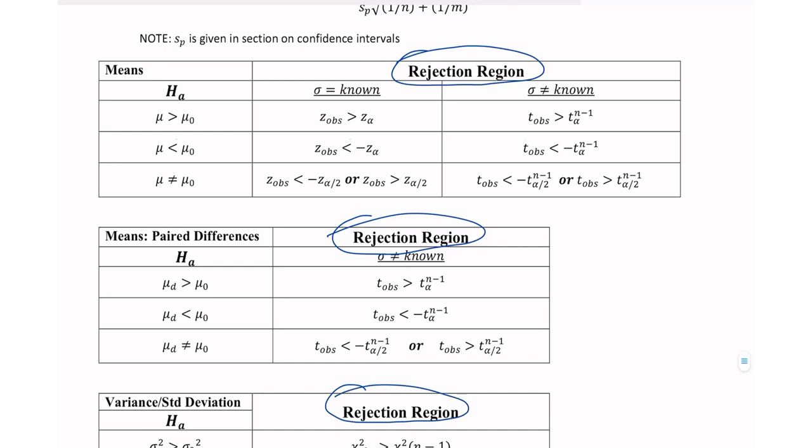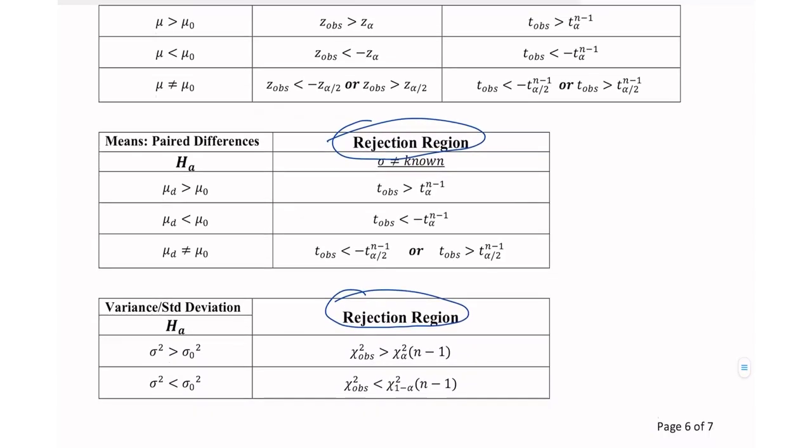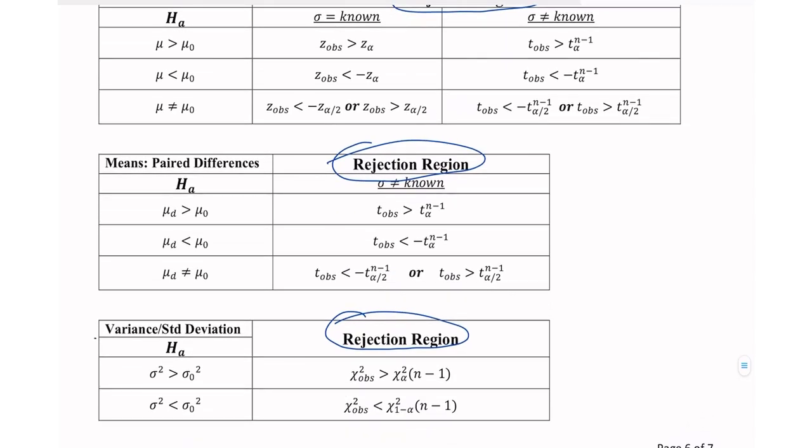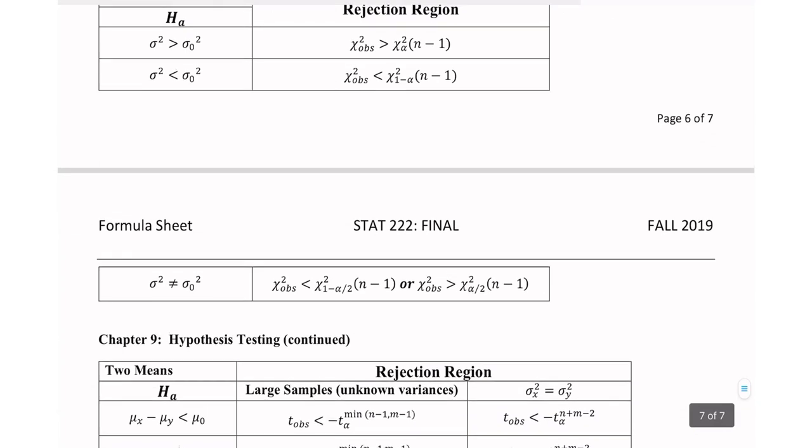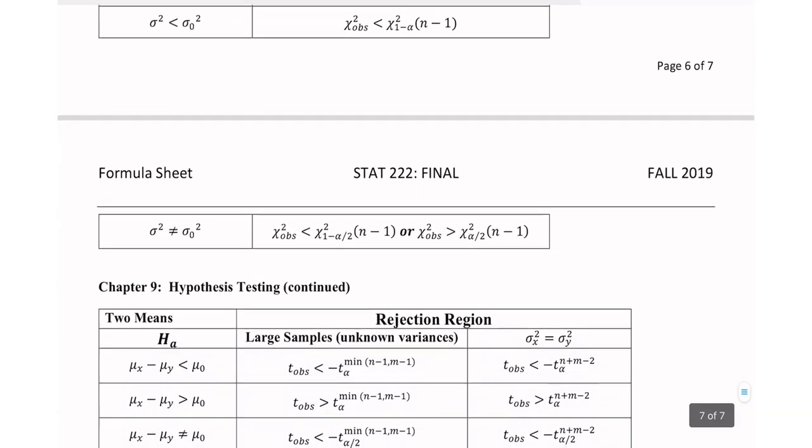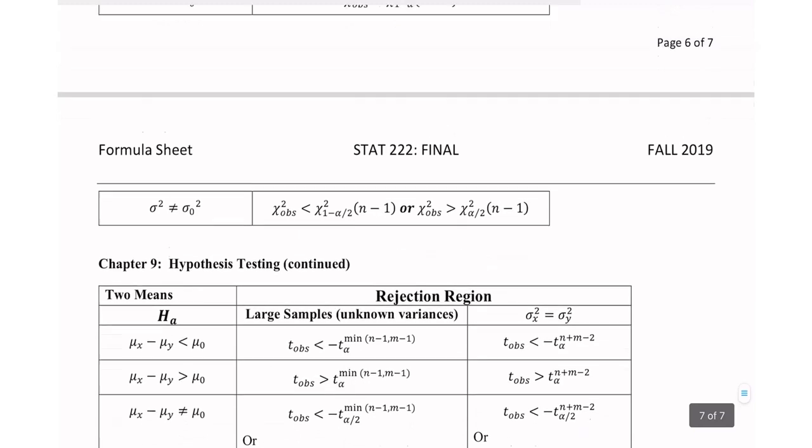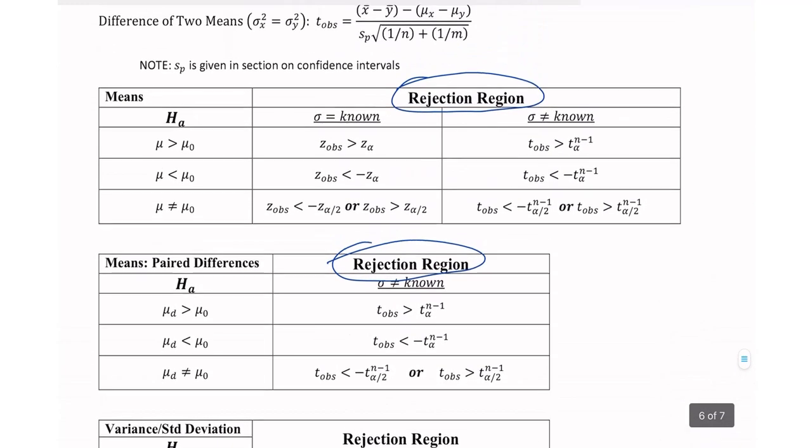Now, we are not going to do this variance or standard deviation. We're not going to get to that this semester, so you can forget about the last table here. I don't know that there's one beyond that. We're going to look at, we're not doing paired differences, so we're not going to look at that one.